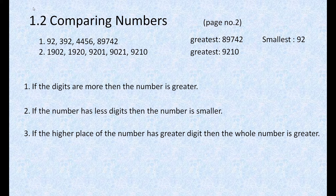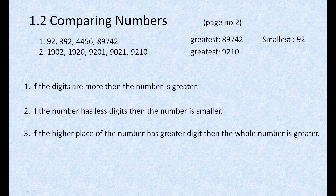Now let's find the smallest number. Earlier when we compared the highest place, we got two numbers — 1902 and 1920 — as the smallest compared to the others. So from these two, we find the smallest. We move to the 100s place: both have 9. So we go to the 10s place. For 1902, the 10s place is 0; for 1920, it is 2. Since 0 is smaller than 2, the smallest number is 1902.